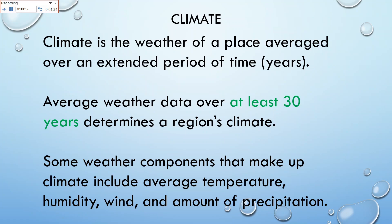When you talk about the climate of a region, you talk about average daily temperature, you talk about humidity, you talk about wind, and you talk about the amount of precipitation. So looking at the weather over a long period of time, you can determine a region's climate.